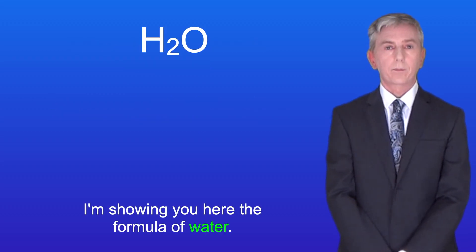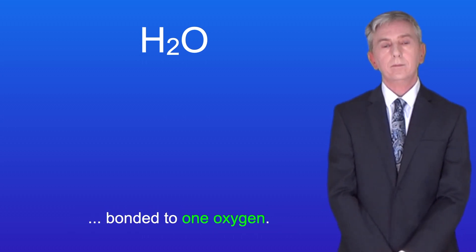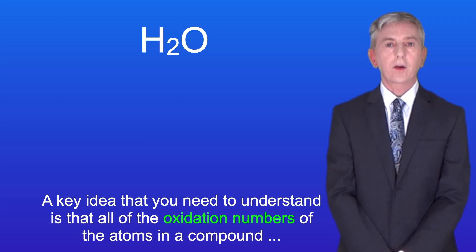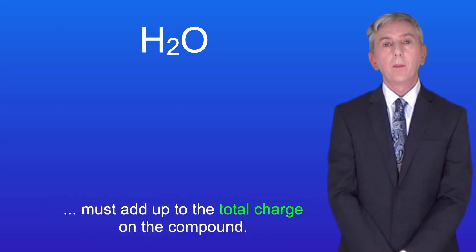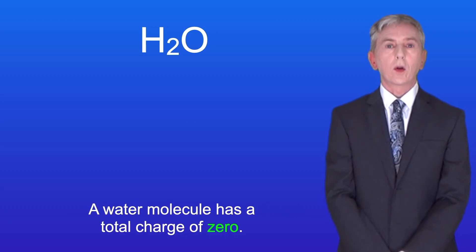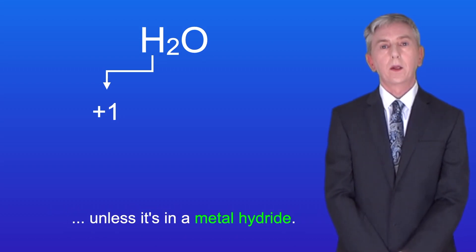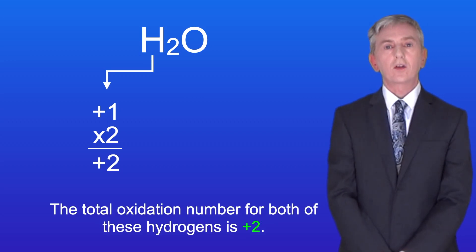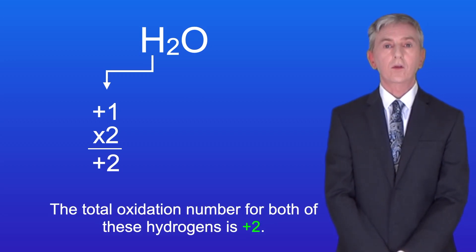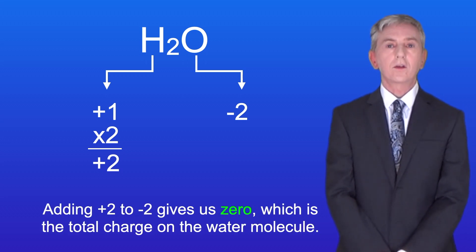I'm showing you here the formula of water. A molecule of water contains two hydrogens bonded to one oxygen. A key idea you need to understand is that all of the oxidation numbers of the atoms in a compound must add up to the total charge on the compound. A water molecule has a total charge of zero. Hydrogen has an oxidation number of plus one unless it's in a metal hydride, so the total oxidation number for both hydrogens is plus two. The oxidation number of oxygen is minus two. Adding plus two to minus two gives us zero, which is the total charge on the water molecule.